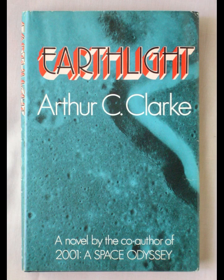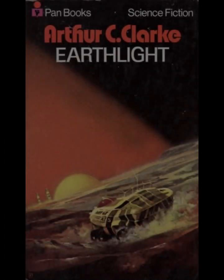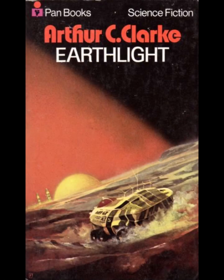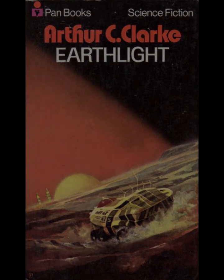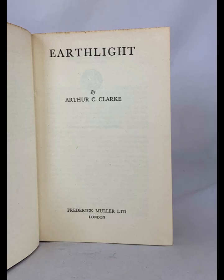Earthlight by Arthur C. Clarke is a compelling exploration of the future, set in a universe where humanity has spread across the solar system. The novel examines the tension between Earth and its colonies on the moon and other planets, focusing on the political and social dynamics that arise as a result of this expansion. Clarke's narrative delves into the themes of human ambition, the inevitability of conflict, and the quest for knowledge, all while maintaining a sense of wonder about the vastness of space.